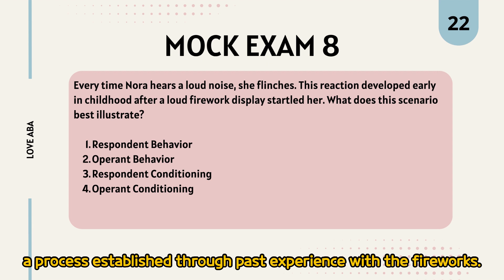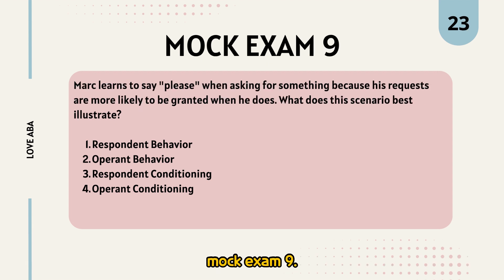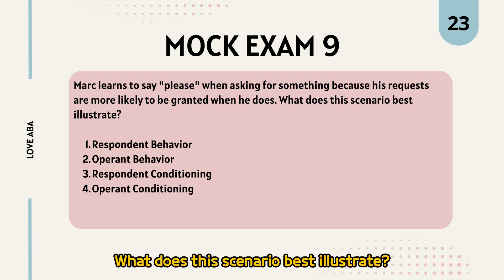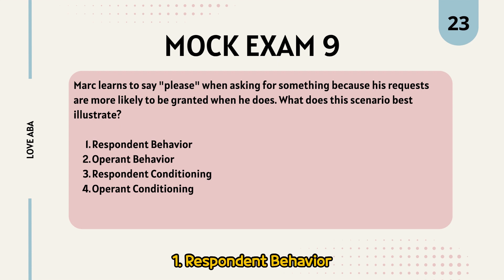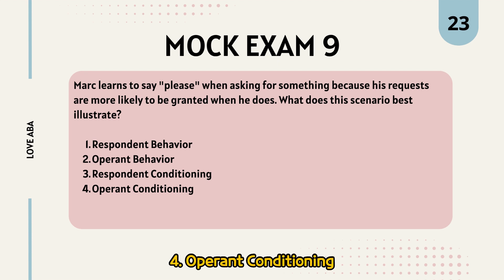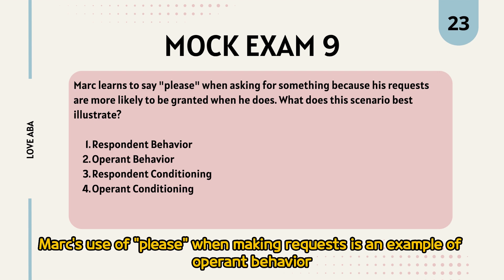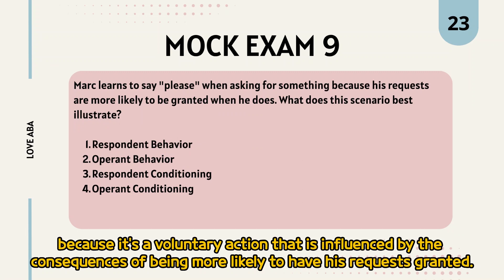Mock Exam 9: Mark learns to say 'please' when asking for something because his requests are more likely to be granted when he does. What does this scenario best illustrate? The correct answer is 2. Operant behavior. Mark's use of 'please' when making requests is an example of operant behavior because it's a voluntary action that is influenced by the consequences of being more likely to have his requests granted.